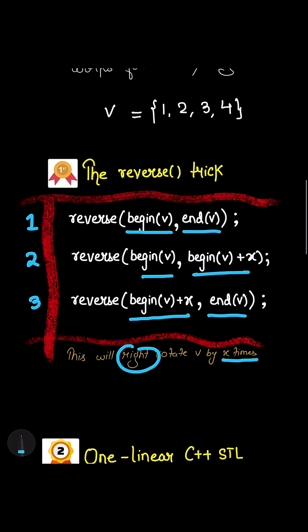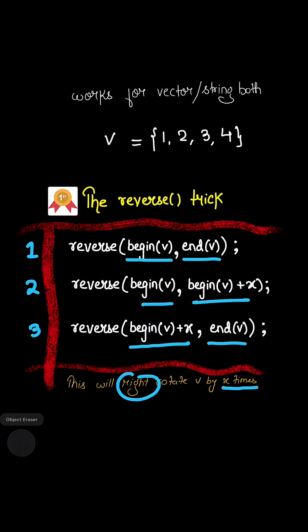And here if you want to rotate the vector left by using this trick, then just simply rearrange the order. First you have to apply this one, then you have to apply this one, and then you have to apply this one. It will be rotated left by x times.